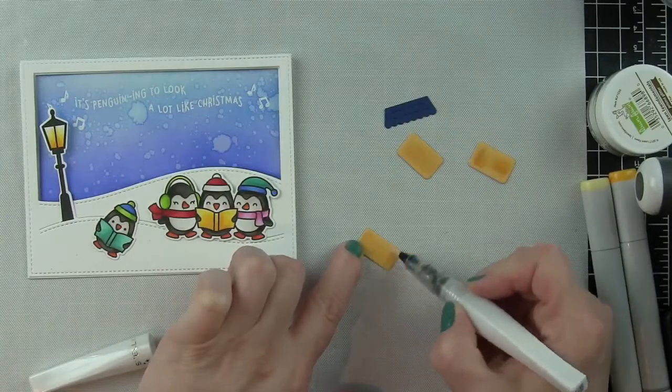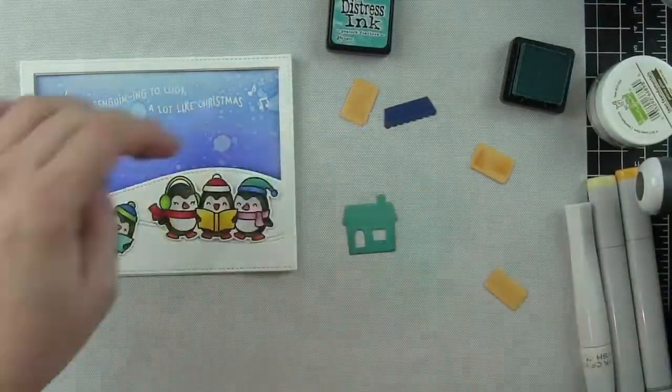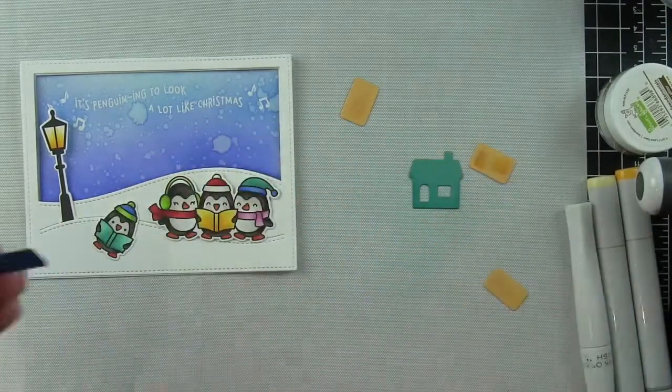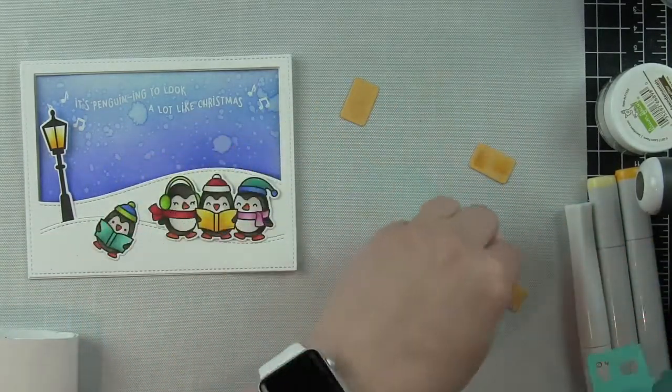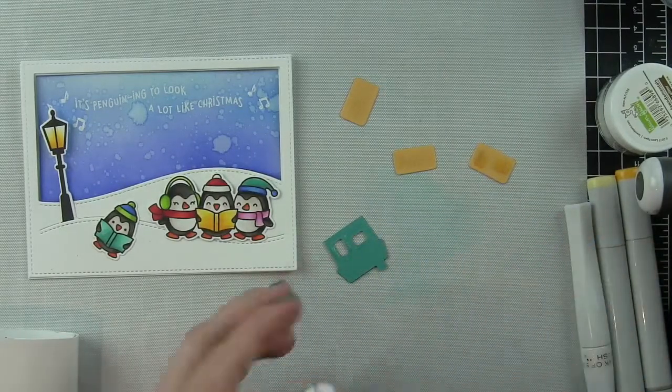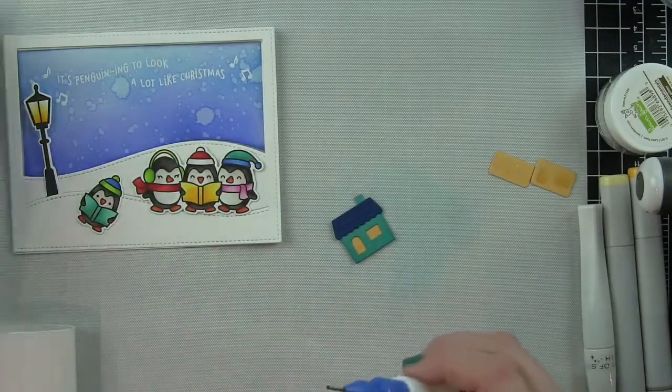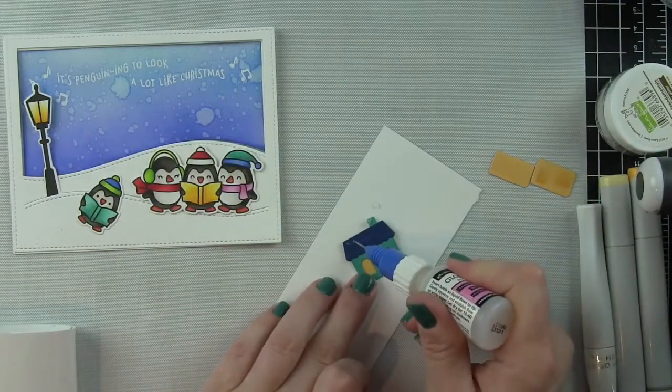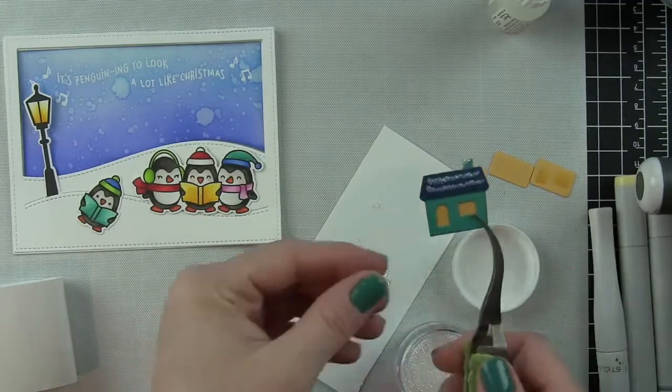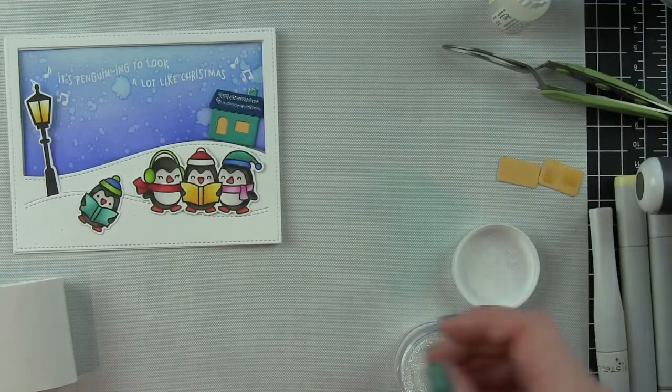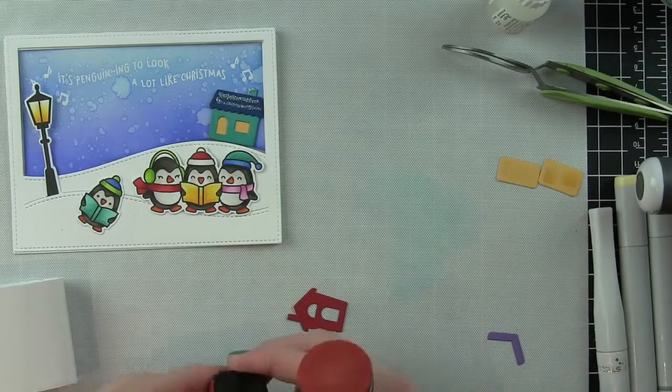I've got all of my components now and I am going to add some Wink of Stella clear glitter brush pen to those yellow rectangles that go behind the die cut houses. That way it makes the windows look kind of glittery. I like to do it before I put the house together so that in case I get messy with the glitter brush pen, I don't get any glitter on the house and it stays just in the window. I've done it both ways and I really prefer when I remember to do it before I assemble.